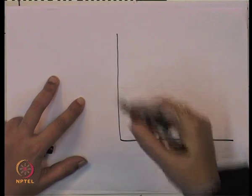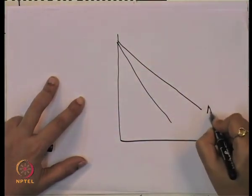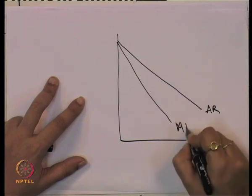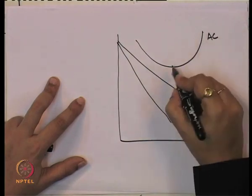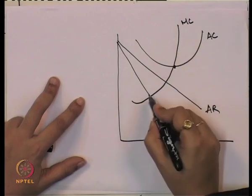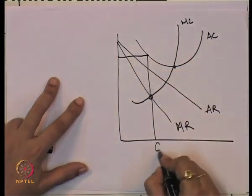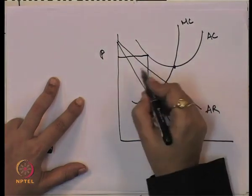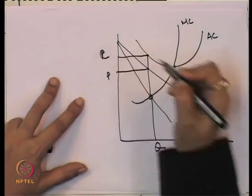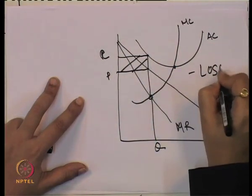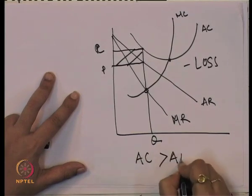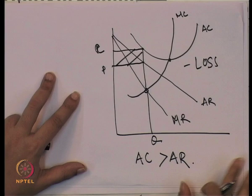In the case of loss, in the short term a monopolistic firm can also make a loss. With the average revenue, marginal revenue, average cost, and marginal cost curves, we find equilibrium quantity and price. The cost exceeds the revenue — the amount of loss is where average cost is more than average revenue. So in the short term, the firm may incur a loss, get normal profit, or earn super normal profit.